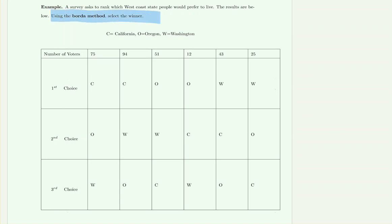Read carefully and identify which method to use. The candidates are C for California, O for Oregon, and W for Washington — three options total. Since we're doing the Borda method, we note that n equals three, and this will help us determine how to distribute the points.